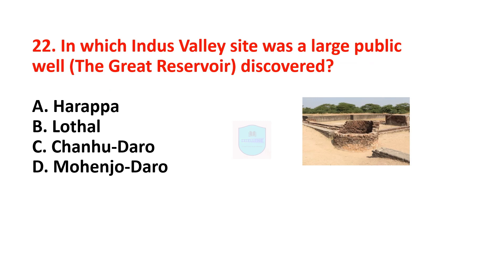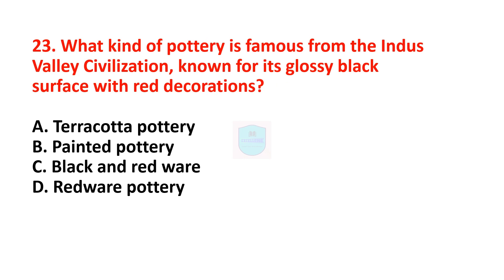Next question: in which Indus Valley site was a large public well — the great reservoir — discovered? Correct answer is Mohenjo-daro. A large public well was discovered in Mohenjo-daro. Next question: what kind of pottery is famous from the Indus Valley Civilization, known for its glossy black surface with red decoration? Correct answer is painted pottery.